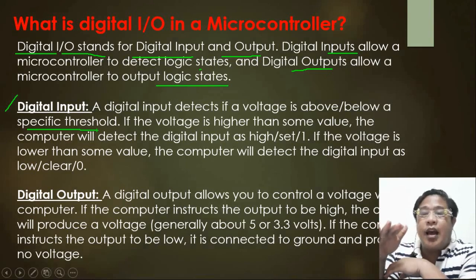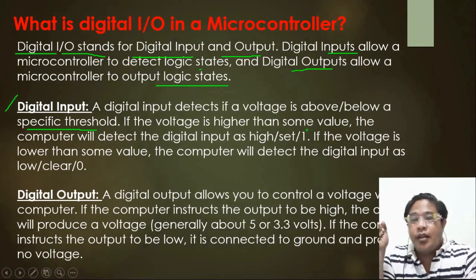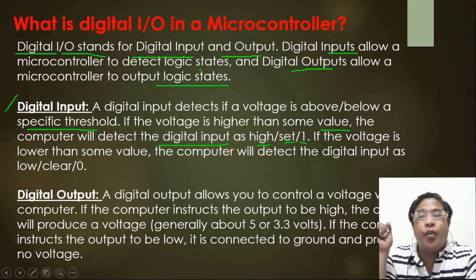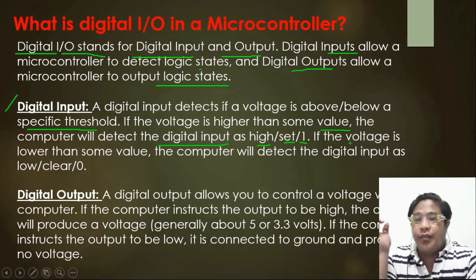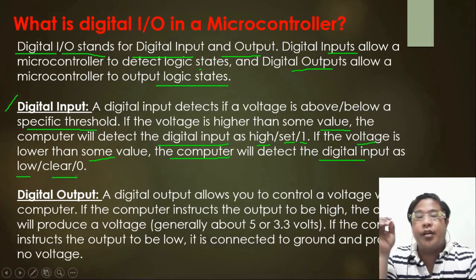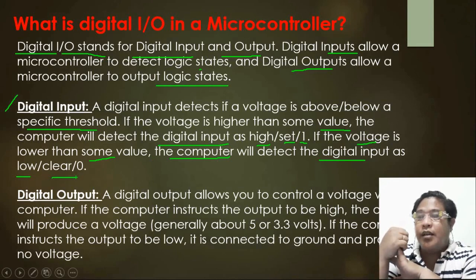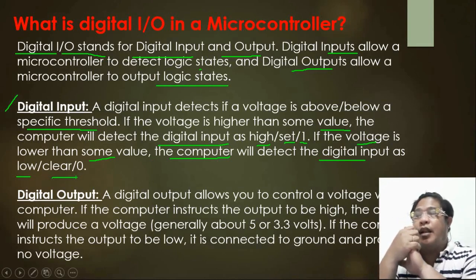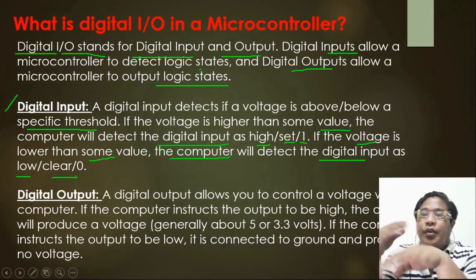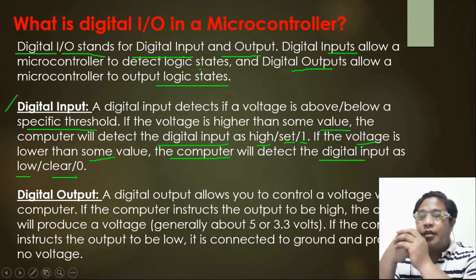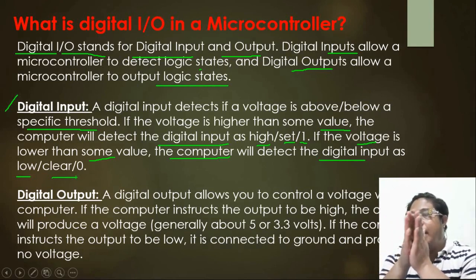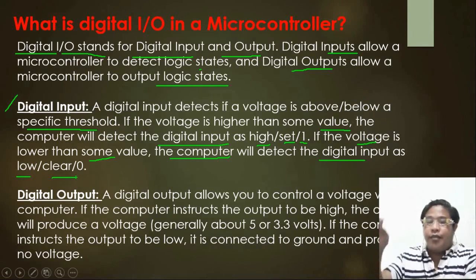The digital input is responsible for detecting whether the voltage is high or low. If the voltage is higher than the threshold value, the computer will detect the digital input as high and set it to 1. If the voltage is lower than the threshold value, the computer will detect the digital input as low, or 0. Digital input plays an important role in managing the voltage flow.